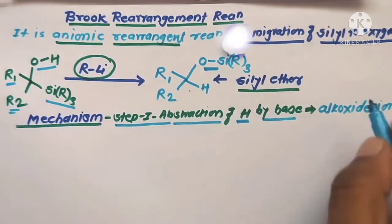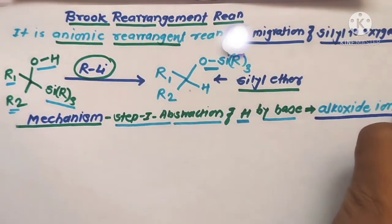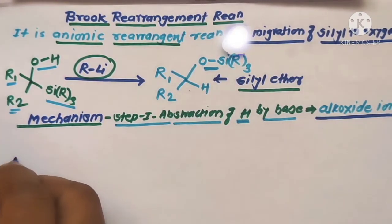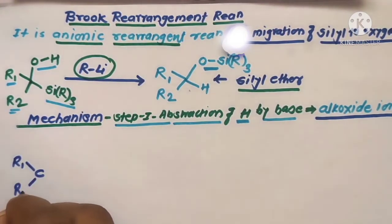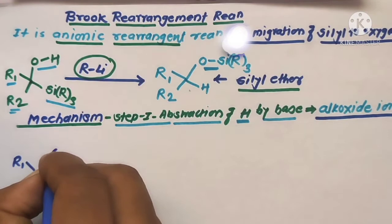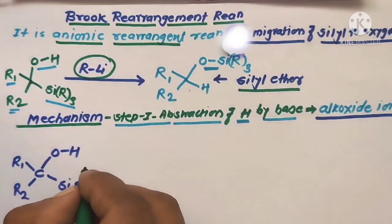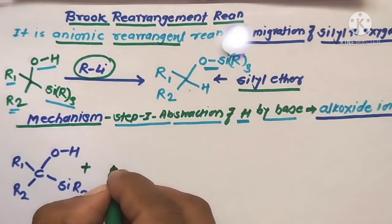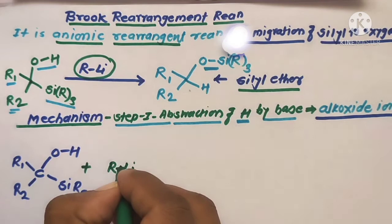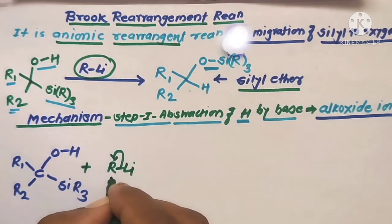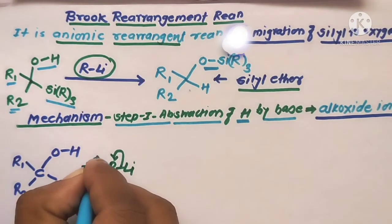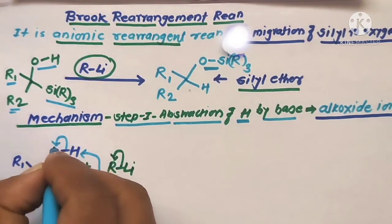In step one, the substrate molecule — with R1 and R2 groups bonded to silicon, three R groups, and an OH group — reacts in the presence of a base. Alkyl lithium is used as the base. The bonding electrons shift toward the electronegative alkyl group, so the alkyl group acts as a base and abstracts the acidic proton from the hydroxyl group to form the alkoxide ion.